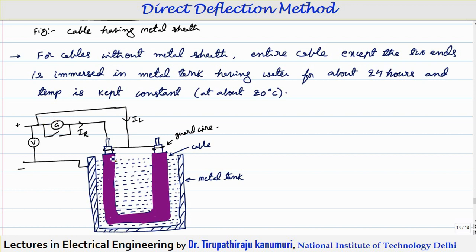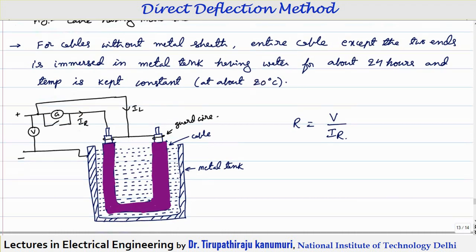So the leakage current will not be carried by your conductor. The galvanometer is connected to the conductor and it indicates the value of IR. The insulation resistance is equal to voltage measured divided by IR. Whatever current is leaking from the conductor through the insulator through the saline water to the negative terminal is not measured by the galvanometer — that is the reason for providing the guard wire.